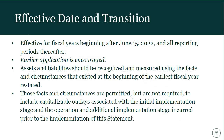Statement 96 is effective for all fiscal years beginning after June 15, 2022, or June 30, 2023 year-ends and forward. Earlier application is encouraged, especially given its alignment with Statement 87. Assets and liabilities resulting from SBITAs should be recognized and measured using facts and circumstances that existed at the beginning of the fiscal year in which the statement is implemented. Governments are permitted but not required to include capitalizable outlays from the initial implementation and operation stages incurred prior to implementation.